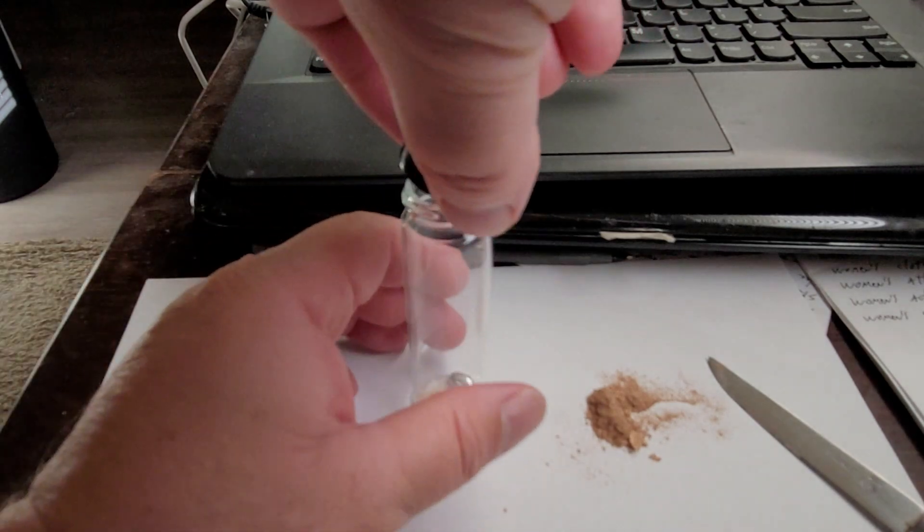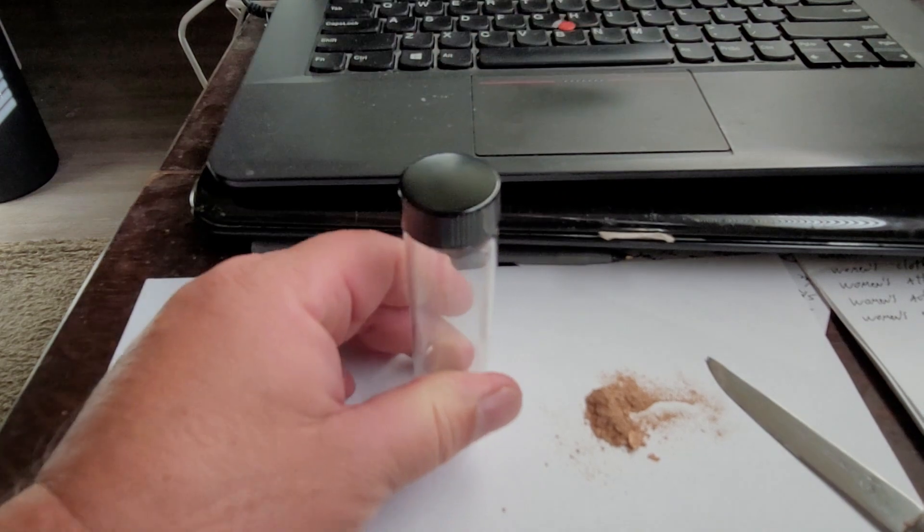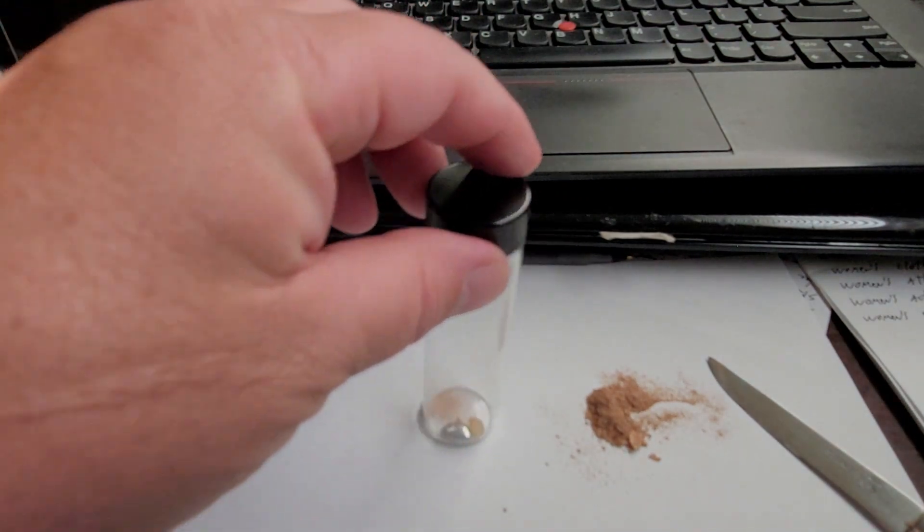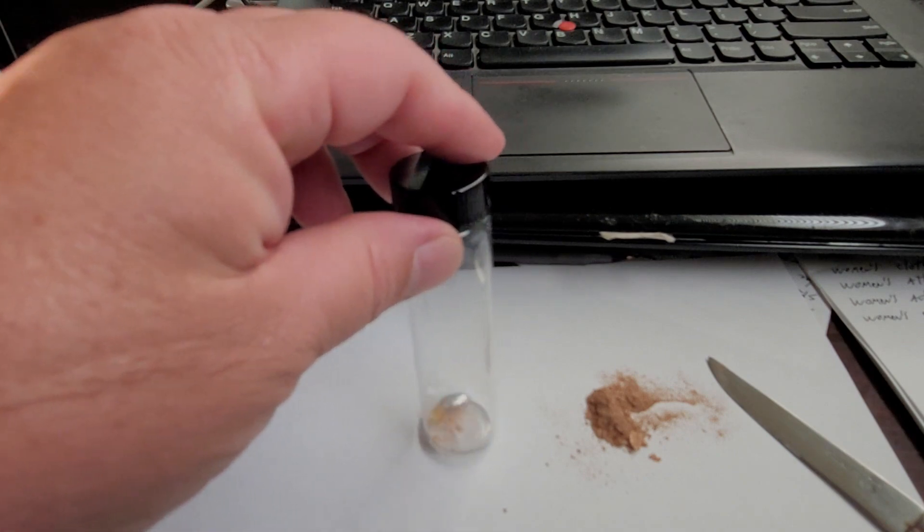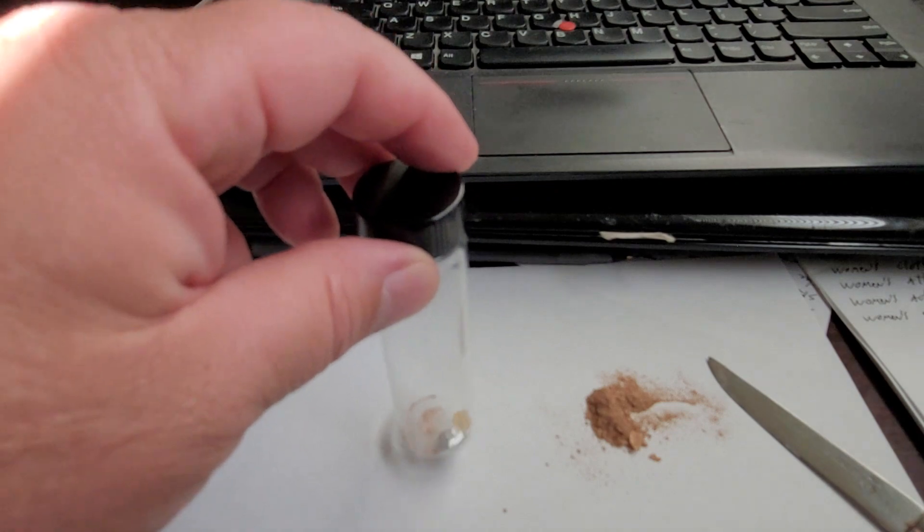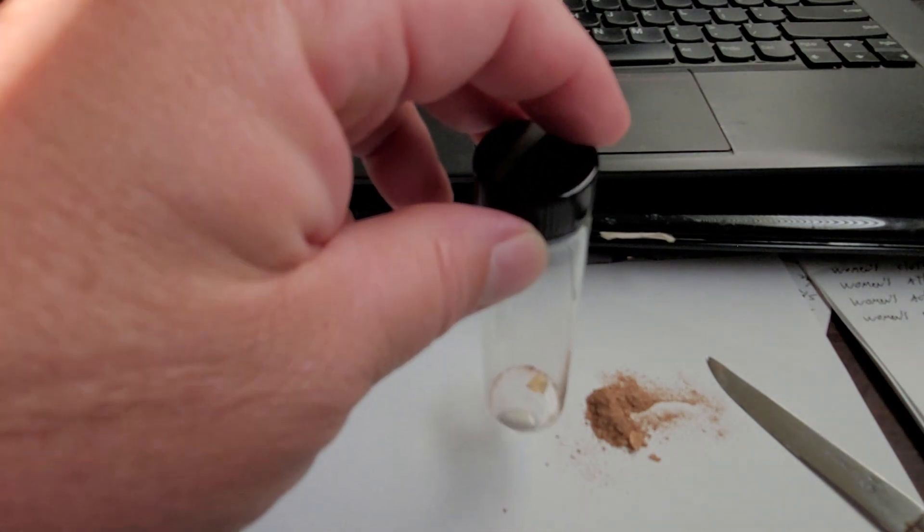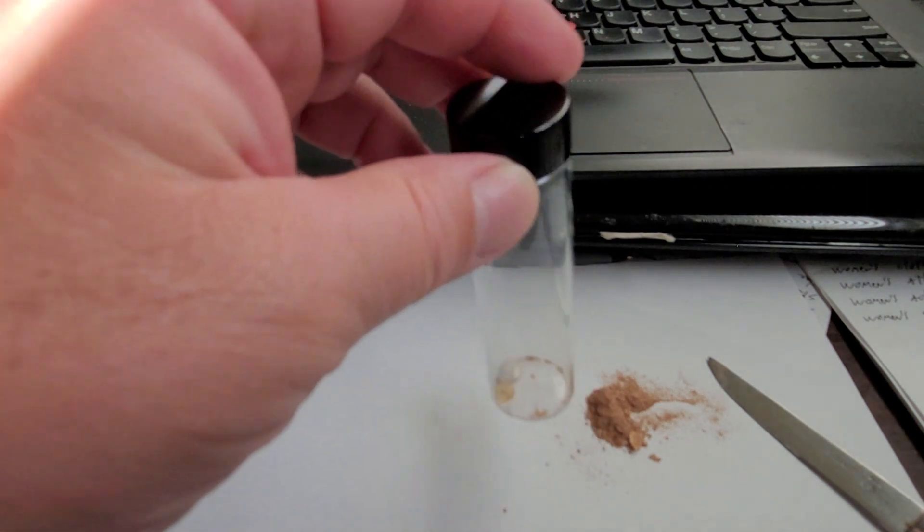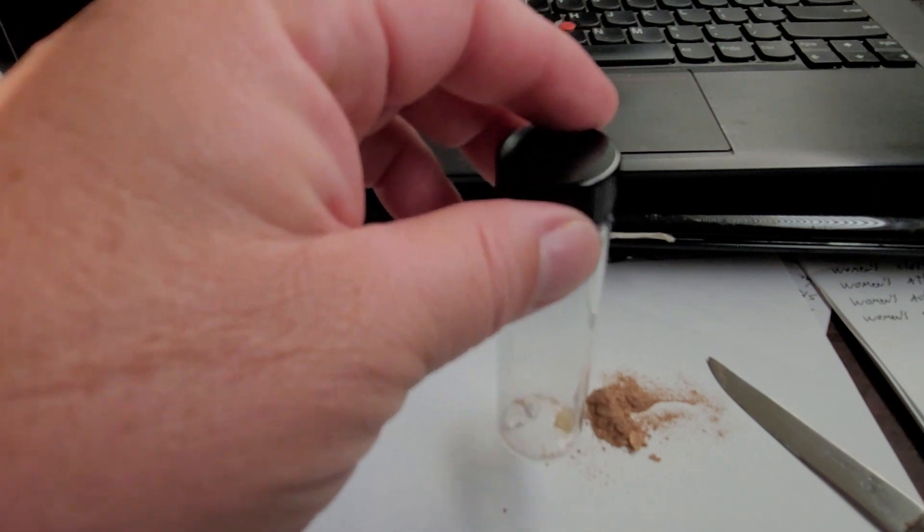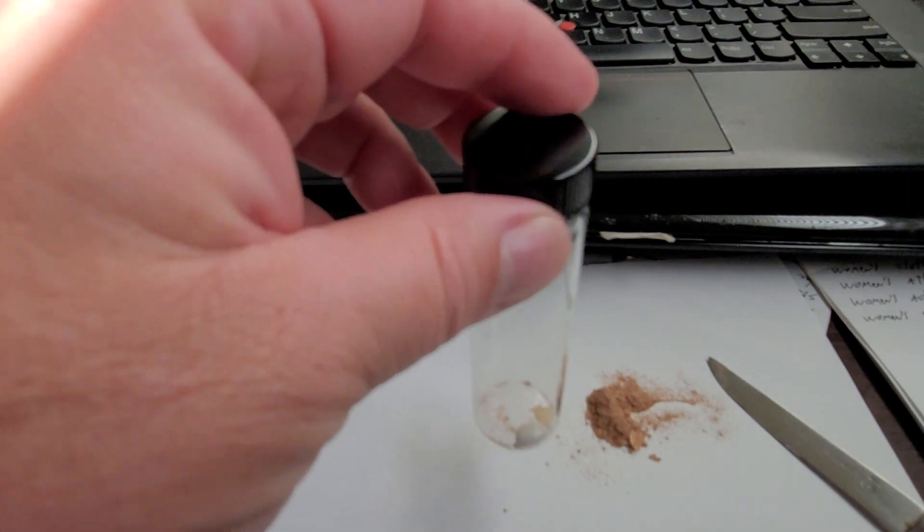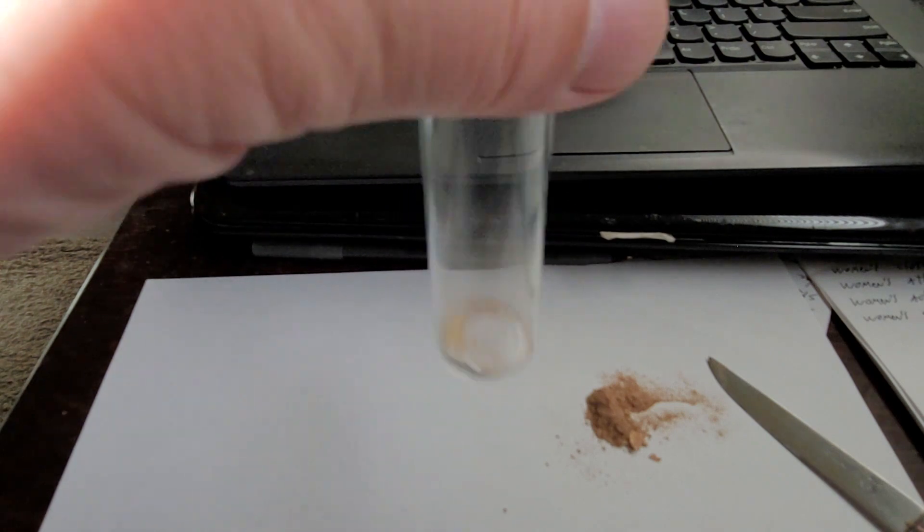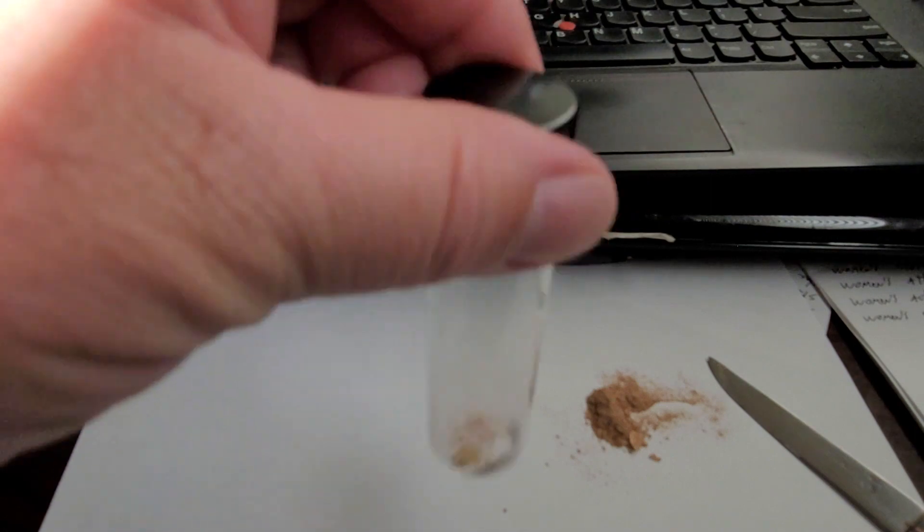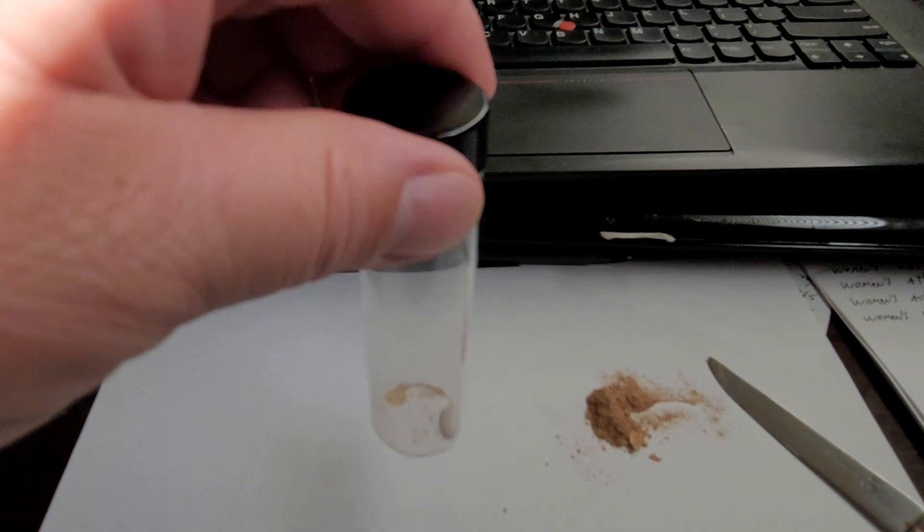I'm going to start by swirling this around a bit to see if we notice anything. I'm trying to stay in the camera. I do notice something. The powder seems to be sticking to the mercury.